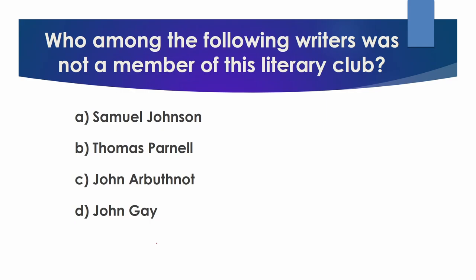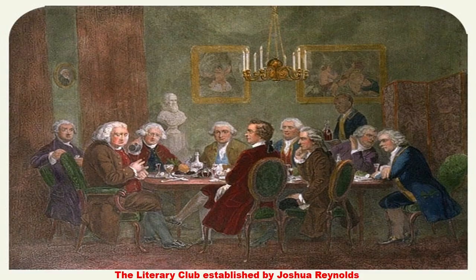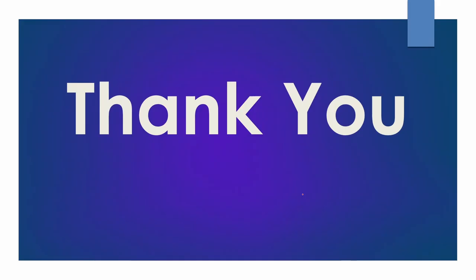Now, back to the question from earlier. The correct answer is option A: Samuel Johnson. Johnson was a member of a club called The Literary Club, or simply The Club. This society was originally set up by the artist Joshua Reynolds in 1764 to provide Samuel Johnson with ready conversation and dining company. The group would meet once a week for supper and debate at the Turks Head Tavern in Soho, London, often talking and drinking into the early hours. That's all for today — thank you for listening.